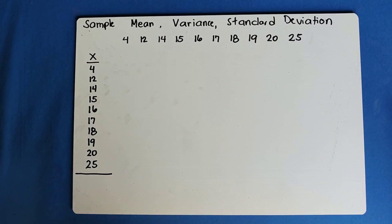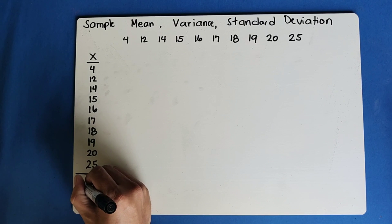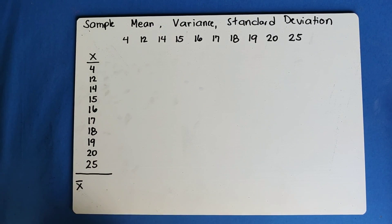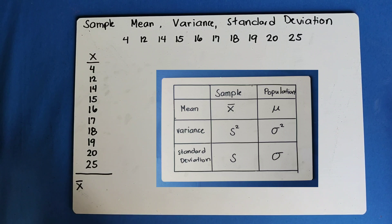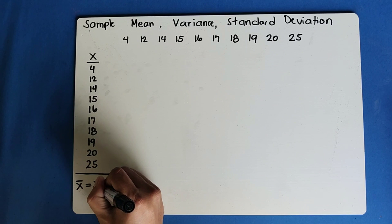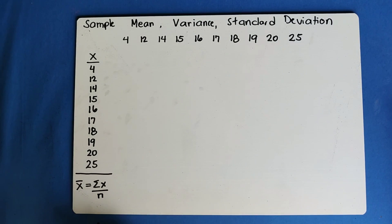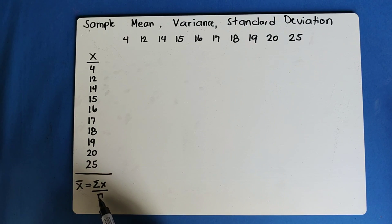So first, let us solve for the sample mean. In sample mean, the symbol used is x-bar. That is our sample mean. For population it is mu (new), while for sample mean it is x-bar. The formula in getting the sample mean is just the summation of x over the number of data — we add all the data and count how many there are, that will be our n.